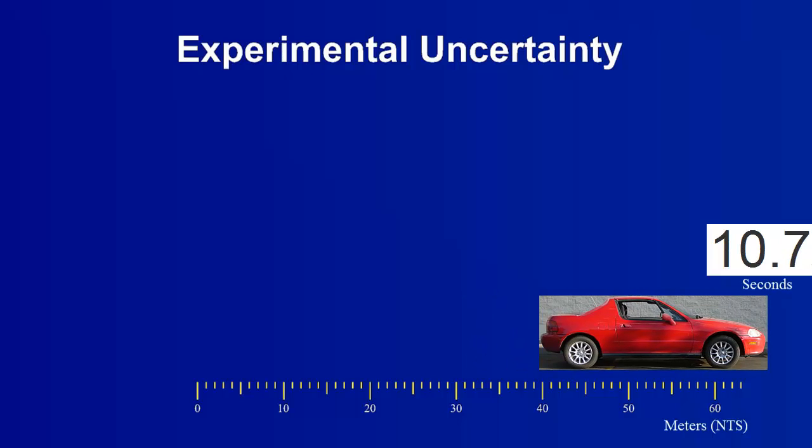Consider that the time was measured using a stopwatch that is accurate to one-tenth of a second, and that the distance was measured using a steel tape. The velocity can be written as a function of the time and distance. More specifically, the velocity will be equal to the distance divided by the time.